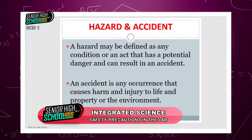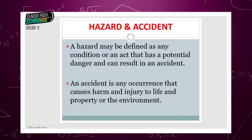The question would be: what is the difference between a hazard and an accident? Most times you say there's a car accident, but when buildings collapse, we don't call it an accident. In our field of science, there's a difference. We define a hazard as any condition or act that has a potential danger and can result in an accident. A condition or act that has potential danger doesn't mean it has caused the problem — it can trigger it or cause it. Once that action takes place, then we say it's an accident. We define an accident as any occurrence that causes harm and injury to life and property or the environment.